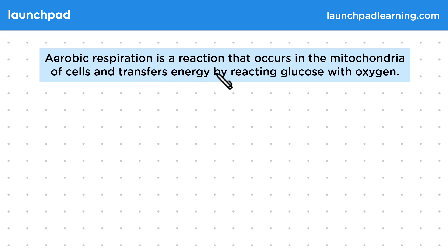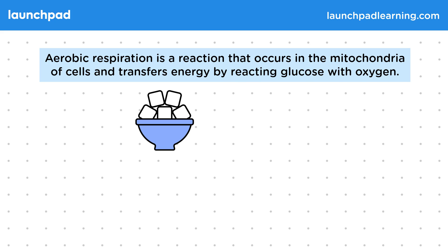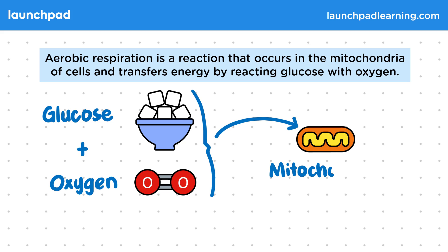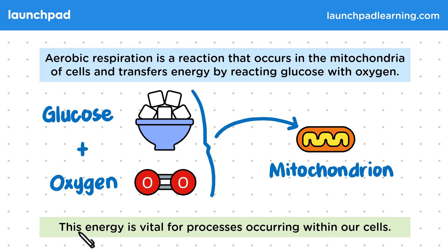Aerobic respiration is a reaction that occurs in the mitochondria of cells and transfers energy by reacting glucose with oxygen. Glucose is a type of sugar. It reacts with oxygen in the mitochondria, which are found within the cytoplasm of cells. Remember that the term mitochondrion is singular and mitochondria is plural. This energy is vital for processes occurring within our cells.